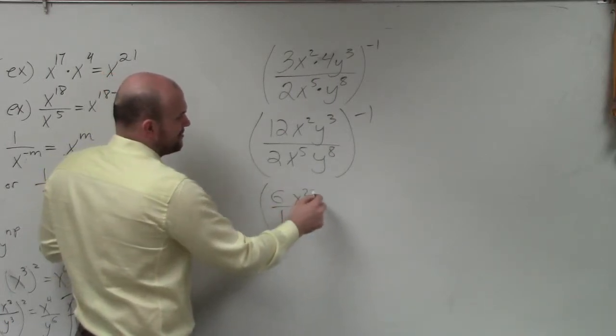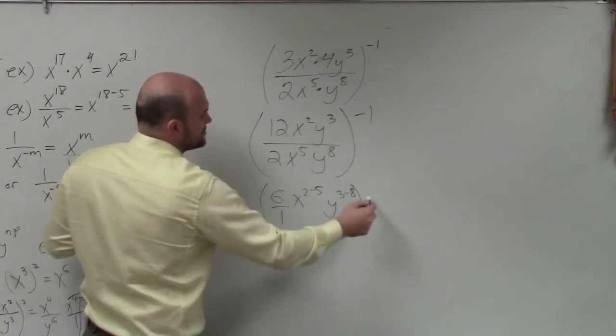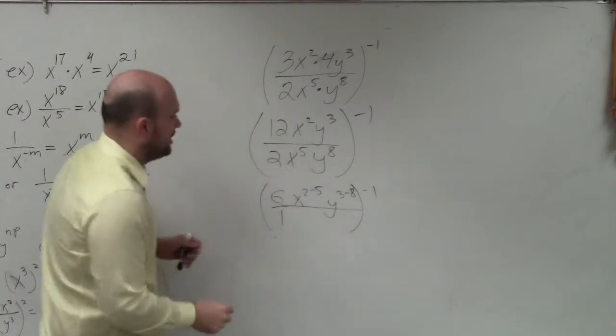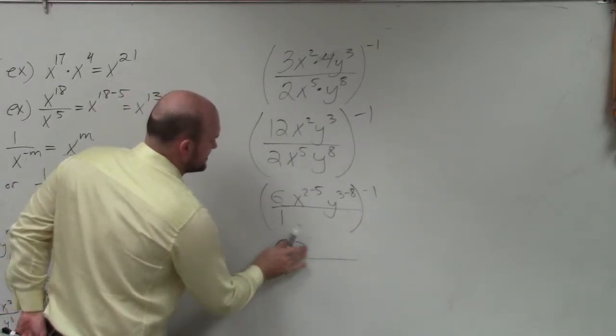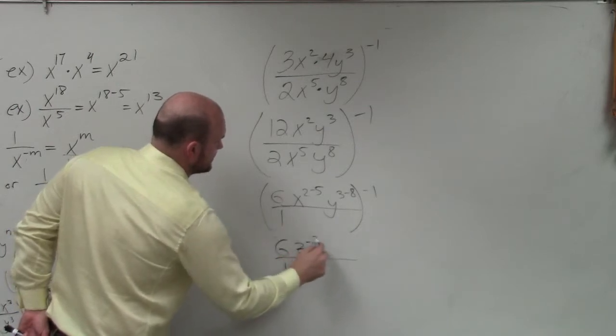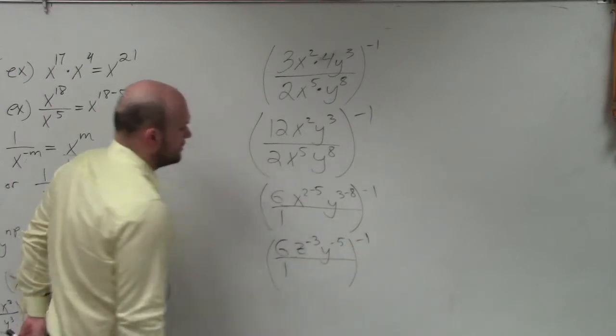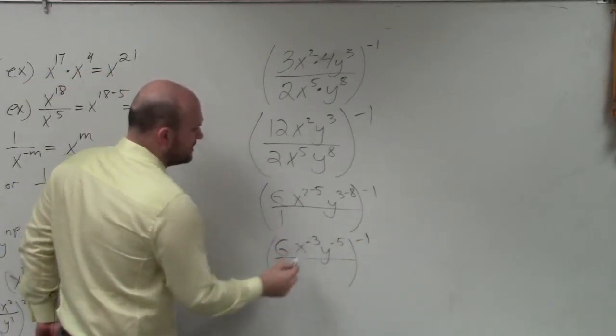Then this becomes x to the 2 minus 5, and this is y to the 3 minus 8. Obviously, I'm just showing my work. If you guys want to quickly write in the answer, that's fine. But what you get is 6 over 1 times x to the negative 3rd and y to the negative 5th. Or x. I don't know where z came from.